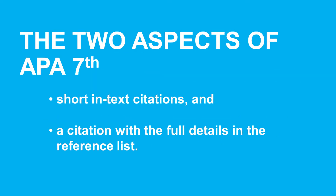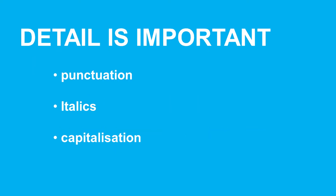There are two aspects to APA referencing: short in-text citations and a citation with the full details in the reference list. When referencing, the details are very important. Remember that you need to take care with punctuation, italics, and capitalization.